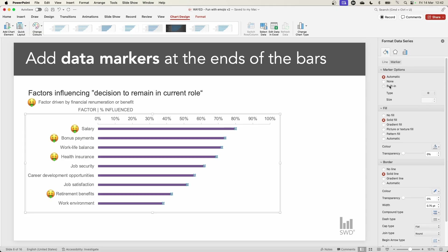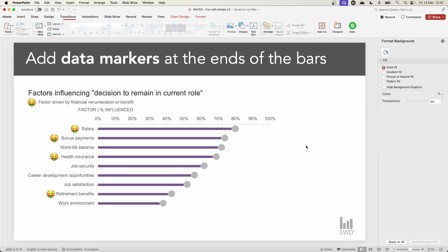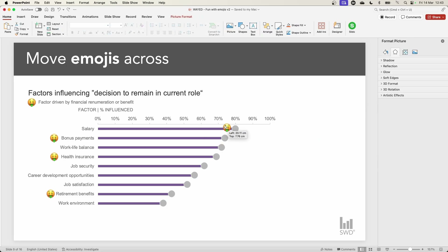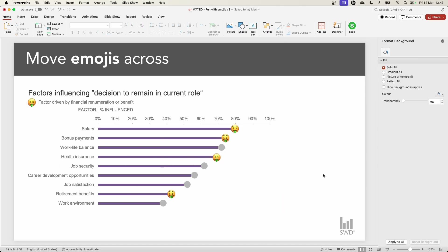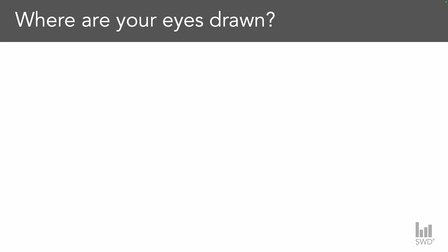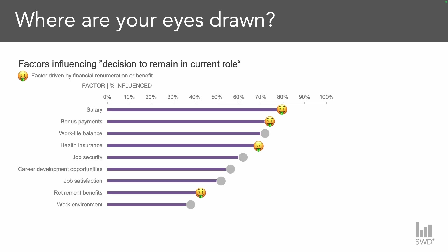I increase the size of the markers to 20 to better match the size of the emojis. Now we can move those emojis from their original position near the category labels to the markers of the bars relating to financial factors. Conducting the where are your eyes drawn test one final time still directs us to the emojis, but this time they are located in a spot that encourages us to scan down the ends of the lollipops and evaluate the results.